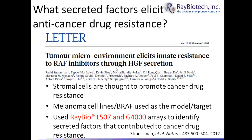The final paper is from Todd Golub's lab in collaboration with Rob Vigstrousman, out of the Broad Institute and Dana-Farber Cancer Institute in Boston. They investigated what secreted factors elicit anti-cancer drug resistance. Stromal cells, present adjacent to tumors but not part of them, have long been thought to promote cancer drug resistance. Melanoma lines were used as the model system, with BRAF as the drug target — a target sought to be inhibited by many anti-cancer drugs.